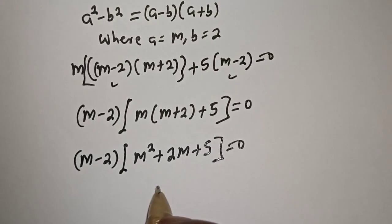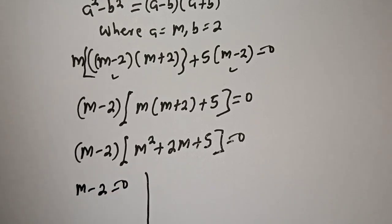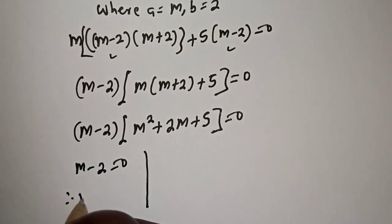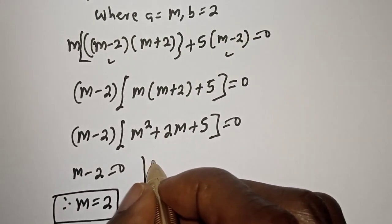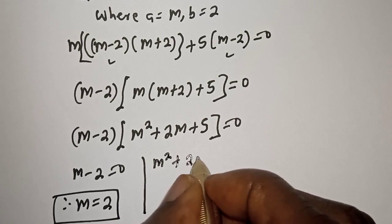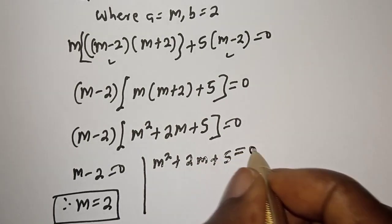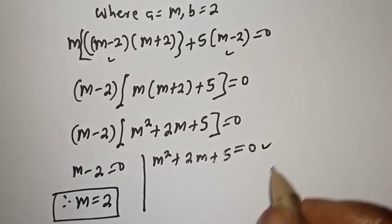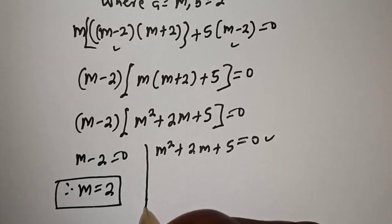So, there are two cases here. The first case is m minus 2 is equal to 0, therefore m is equal to 2. Then the second case is m squared plus 2m plus 5 is equal to 0. This is a quadratic equation — let's solve this using the quadratic general formula.